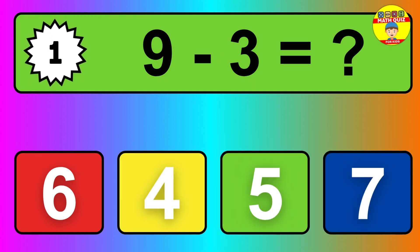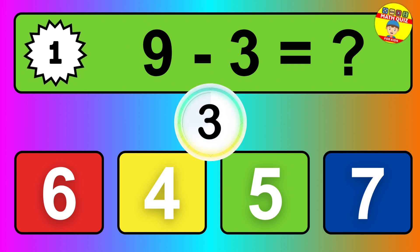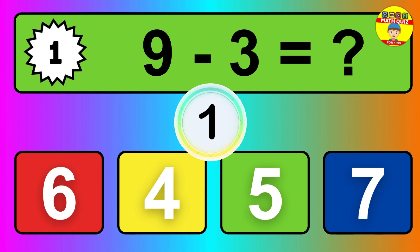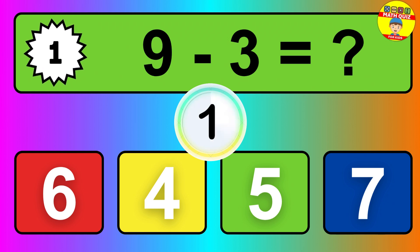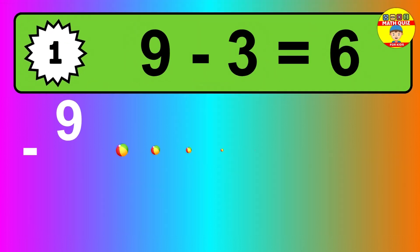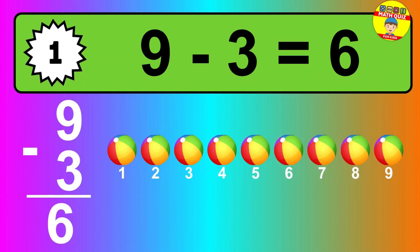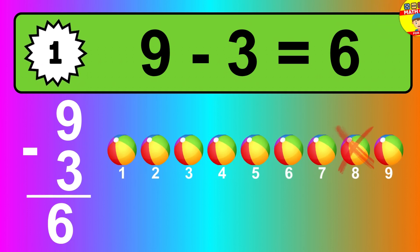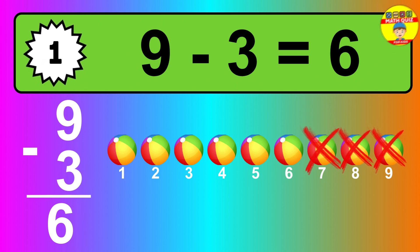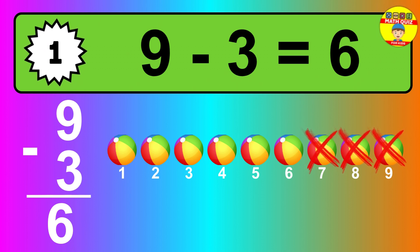Question 1. 9 minus 3 equals what? So the answer is 9 minus 3 is 6. Let's count it. 1, 2, 3, 4, 5, 6.